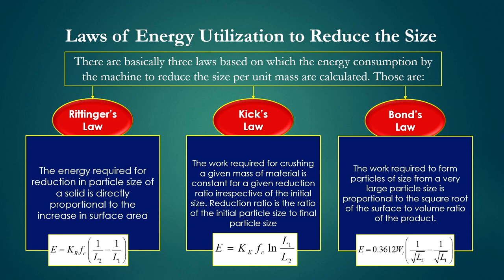Coming to the main part of this lecture: this lecture will follow some laws to calculate the energy utilization to reduce size. There are basically three laws based on which the energy consumption by the machine to reduce size per unit mass is calculated. Those are: Rittinger's law, Kick's law, and Bond's law.